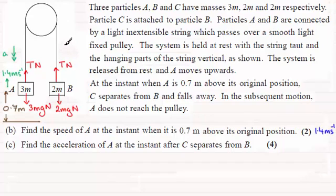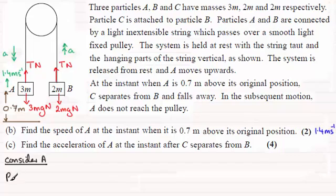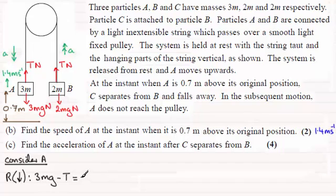That means B will be accelerating upwards with exactly the same acceleration because the strings are inextensible. So we just need to form our equations of motion for each particle. Considering particle A, we resolve downwards — taking that as the positive sense in the direction of acceleration. We get 3mg minus T equals the mass 3m times the acceleration a. We call this equation 1.